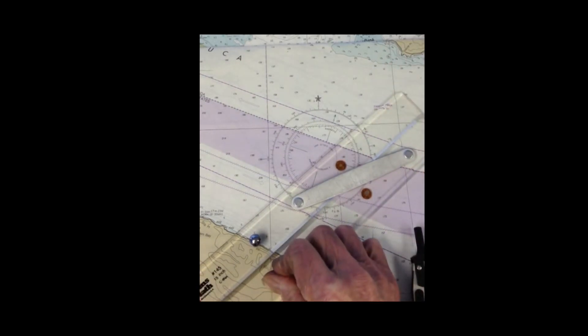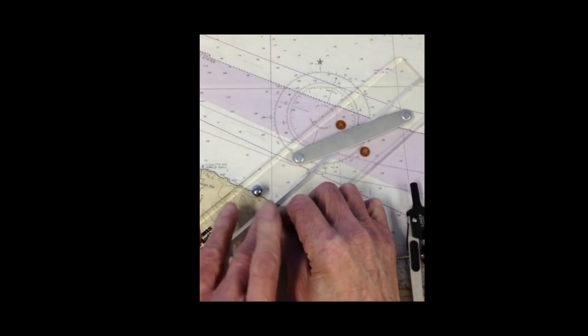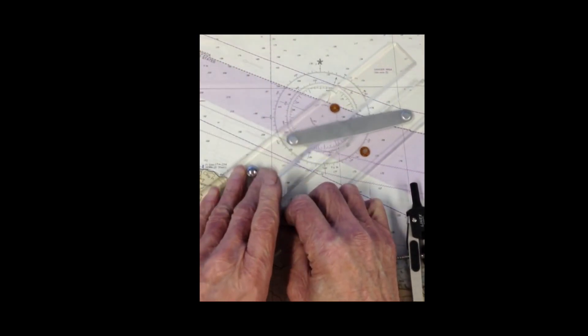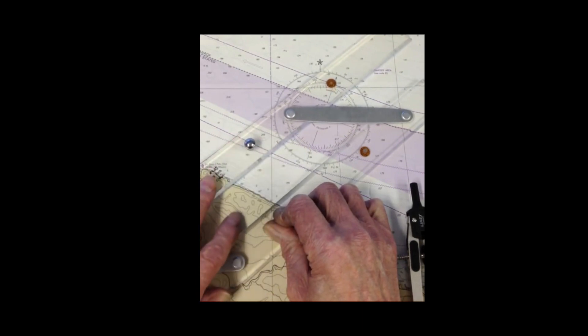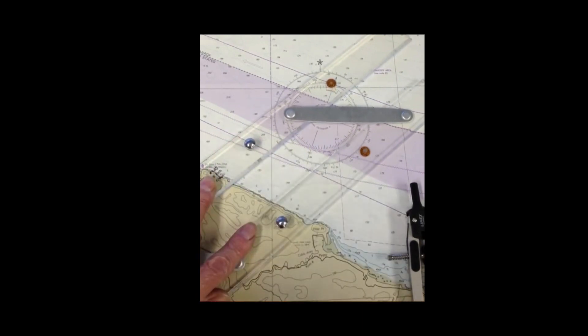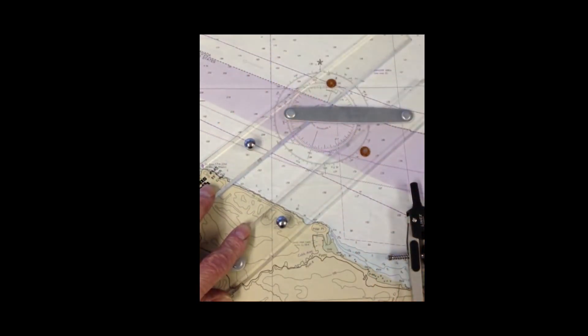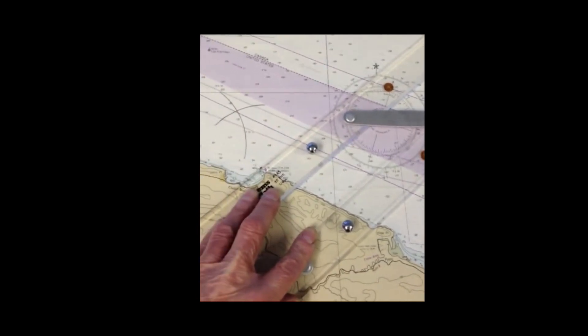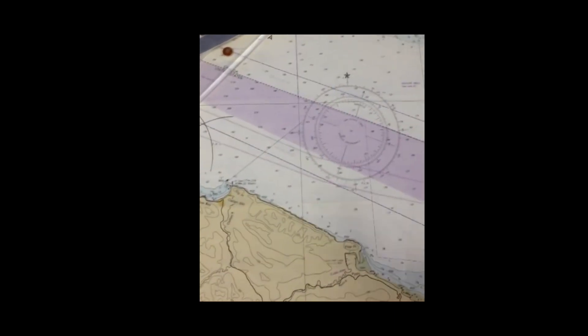Then you hold this one down and move this up to the starting point, which would be about right there. At this point we draw the line. You can just barely see that. So there's a line emanating out of that buoy at 030 magnetic.